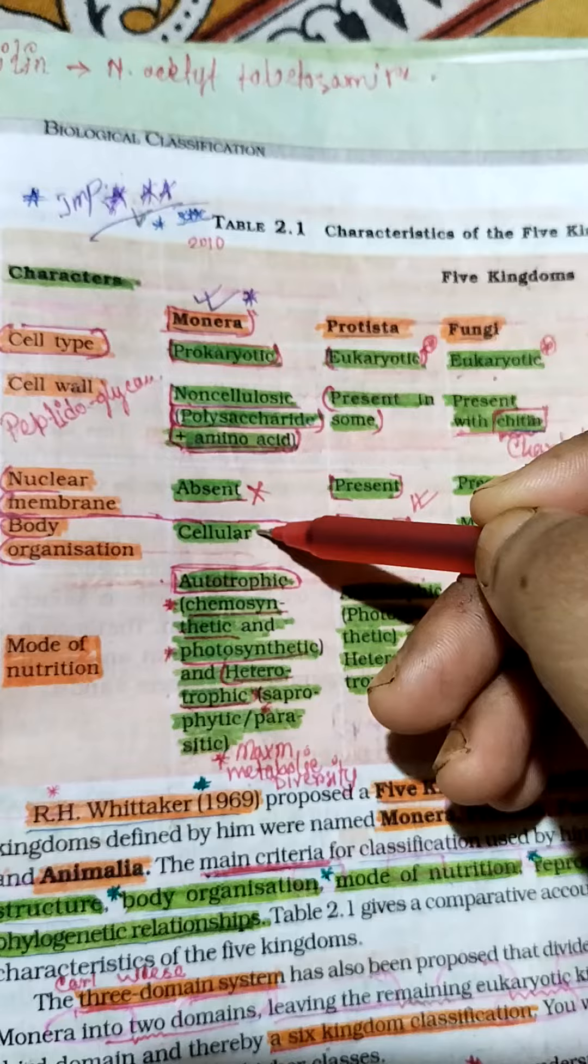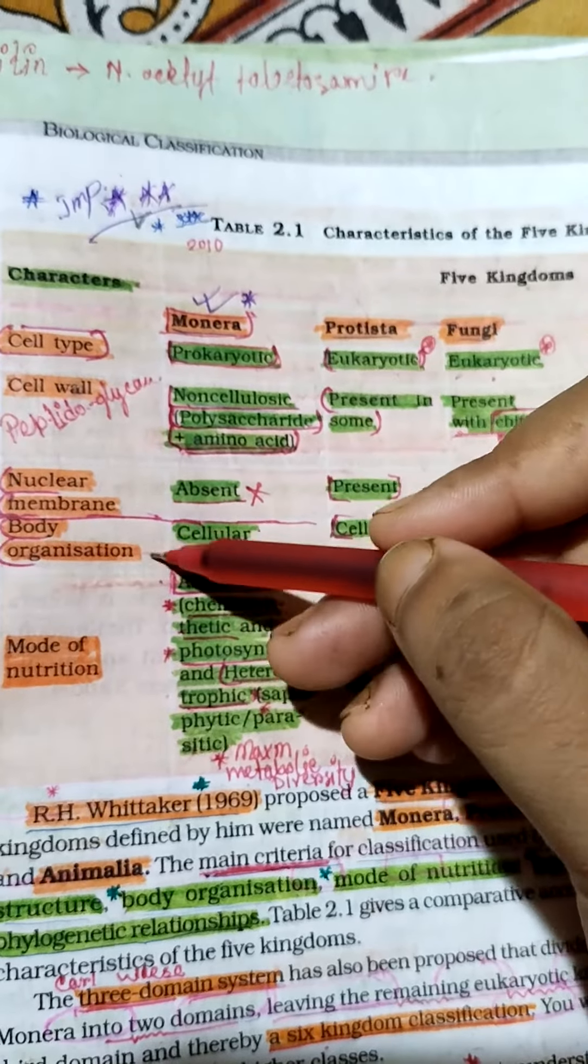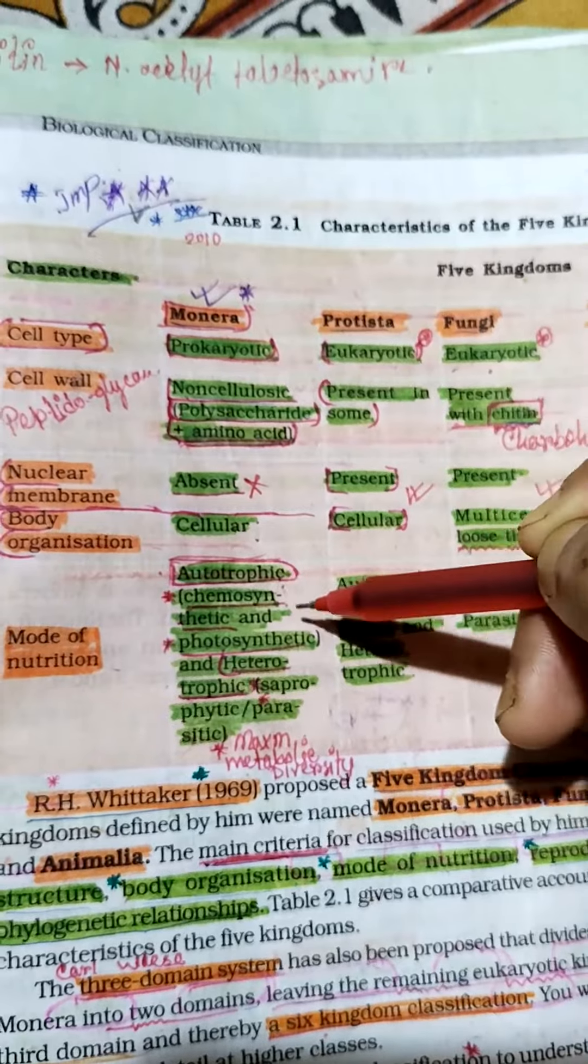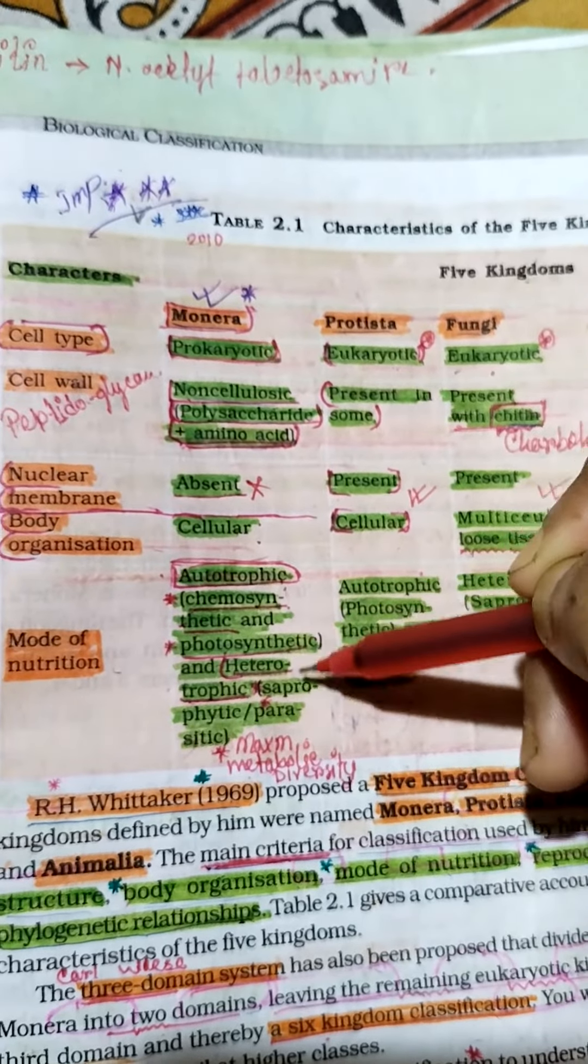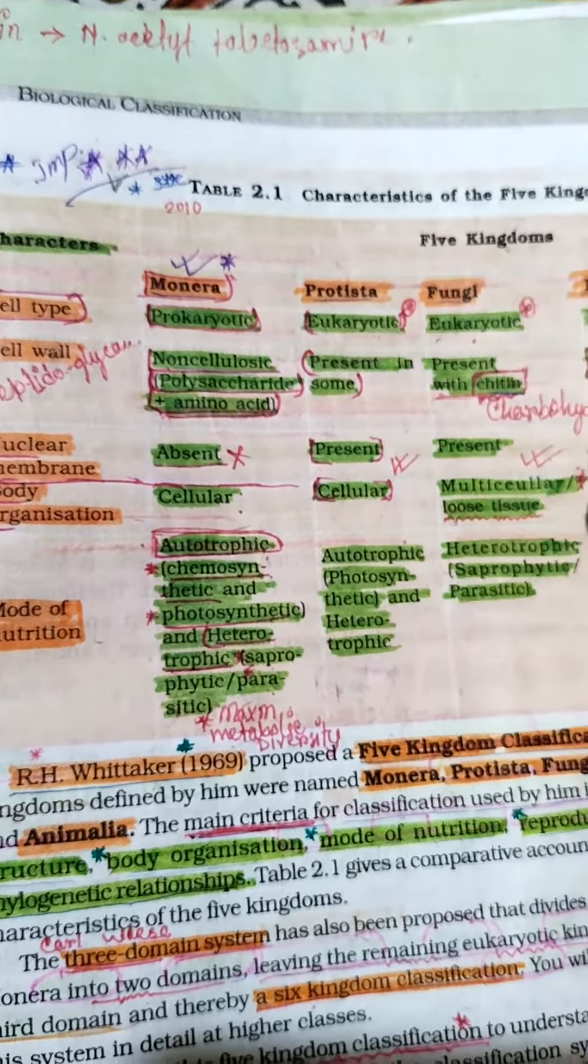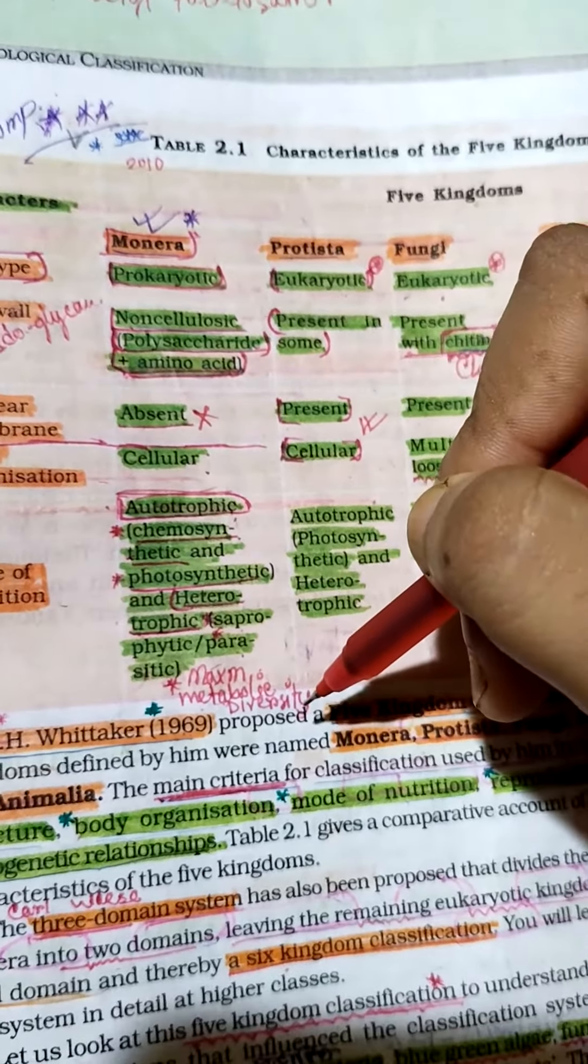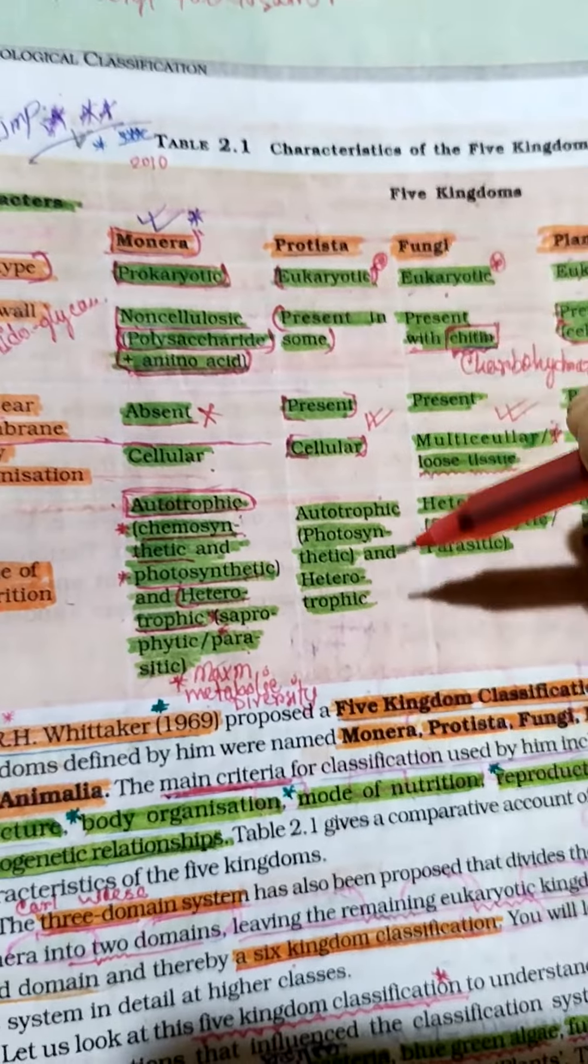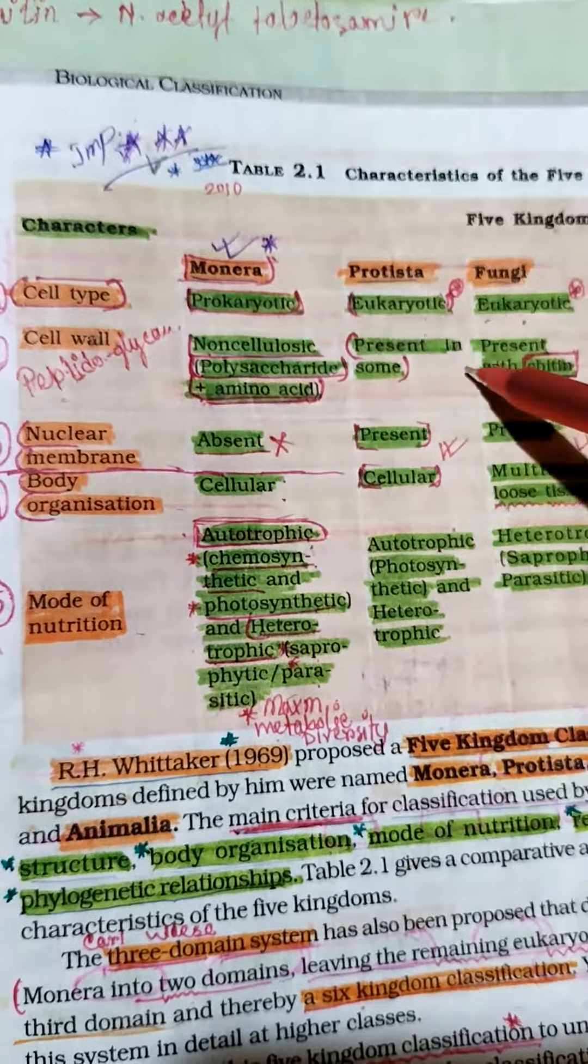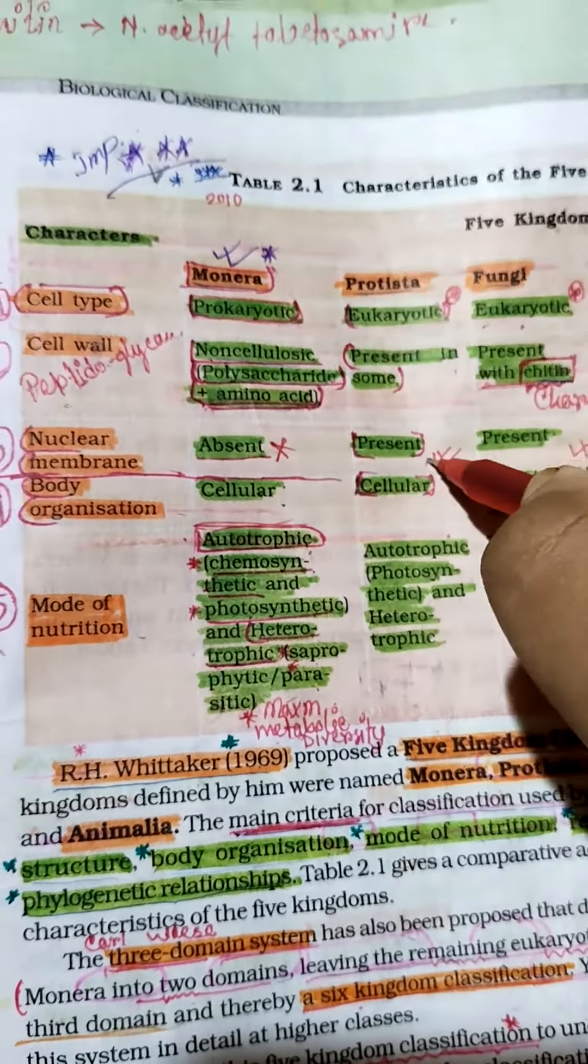Monera have cellular body organization, with nutrition modes including autotrophic chemosynthetic and photosynthetic, and heterotrophic saprophytic and parasitic, showing maximum metabolic diversity. Protista have eukaryotic cell type with nuclear membrane present.